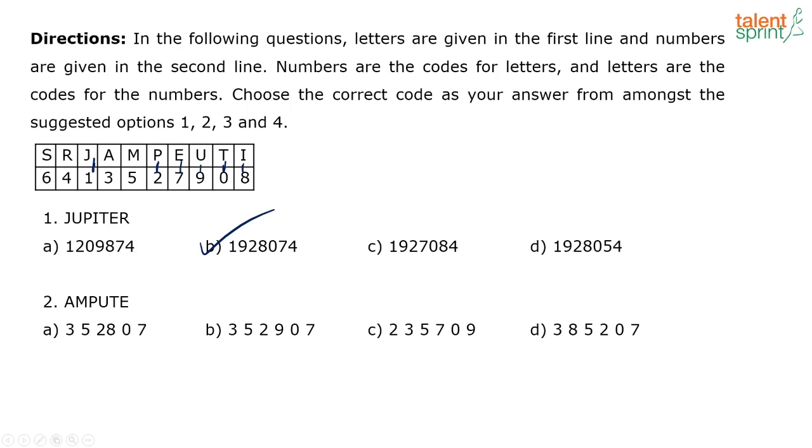Same way, ampute. Ampute, what will be for A? A is 3, M is 5, then P is 2, U is 9. So, you have 3, 5, 2, 9. These two options are there.